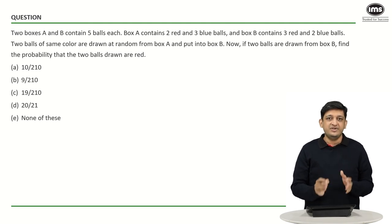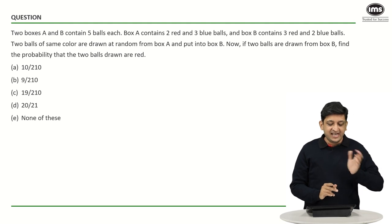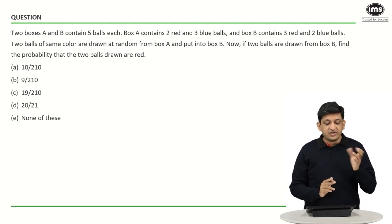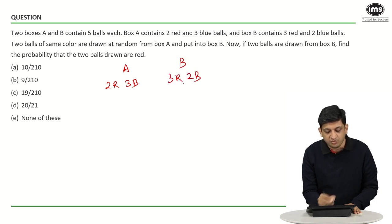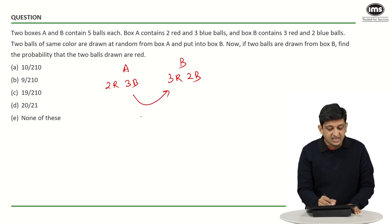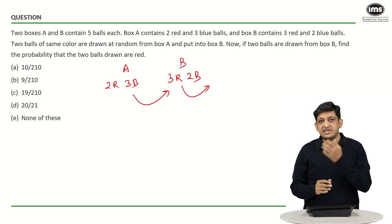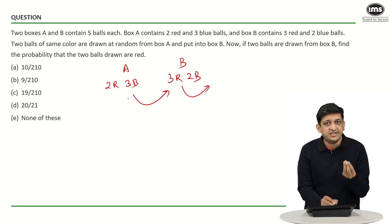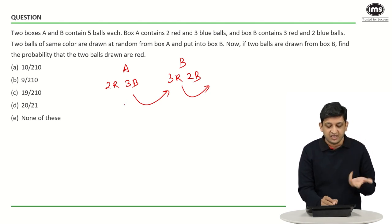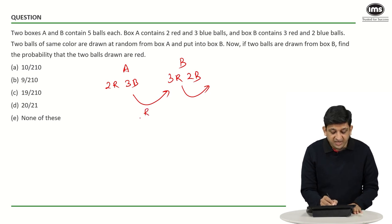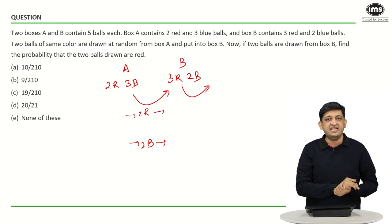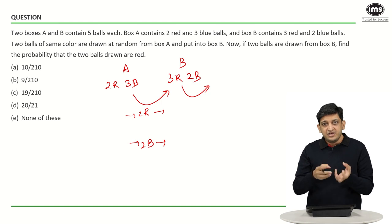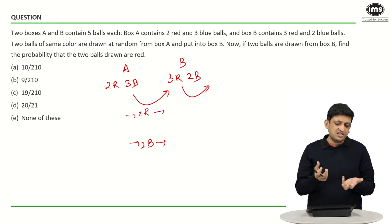In this question, boxes A and B both contain 5 balls each. Box A contains 2 red and 3 blue balls; box B contains 3 red and 2 blue balls. What is happening is 2 balls of the same colour are transferred from box A to box B, and then 2 balls are drawn from box B. You have to find the probability that the 2 balls drawn are red. The colour of the 2 balls being transferred is unknown, and there are 2 ways: either 2 red balls are transferred from A to B, or 2 blue balls are transferred from A to B. These two outcomes will determine the probability of the colour of the balls drawn from B.